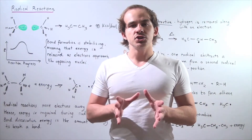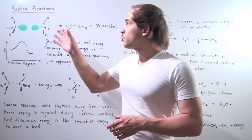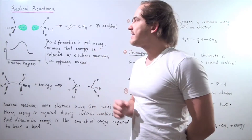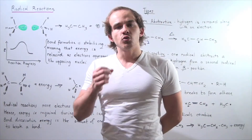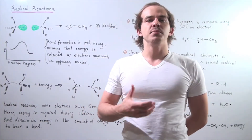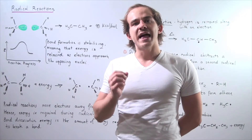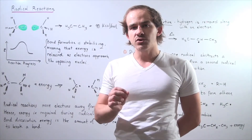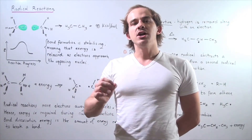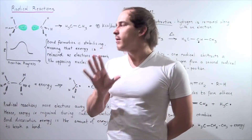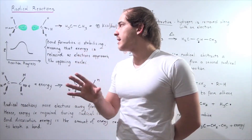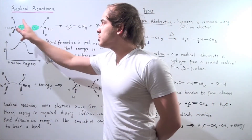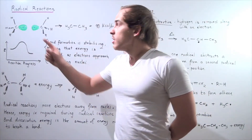Let's begin our discussion on radical reactions and radicals. What exactly is a radical? A radical is simply a molecule or compound that contains a single non-bonding electron on one of the atoms in that molecule or compound. For example, let's look at these two examples of radicals.